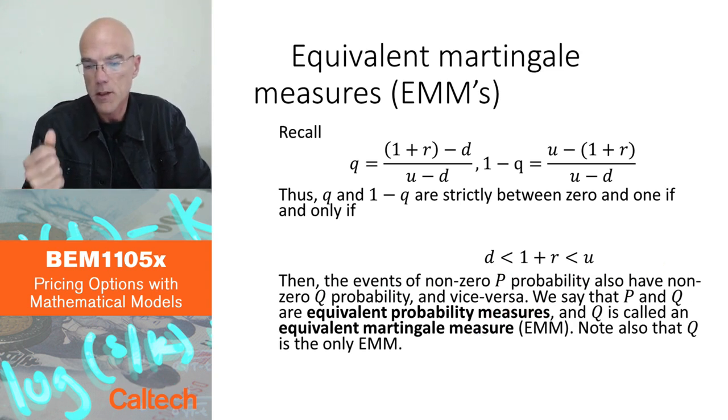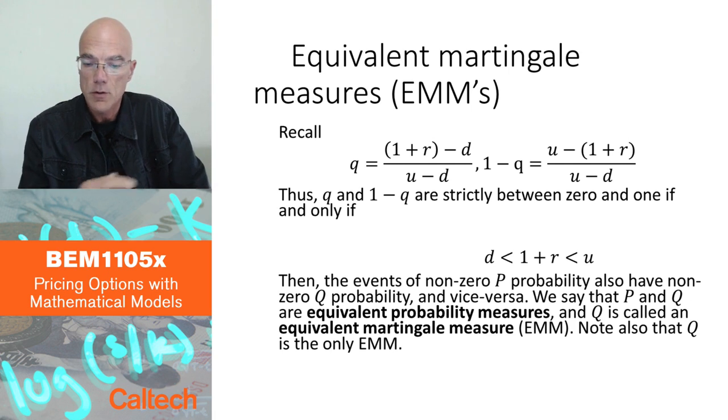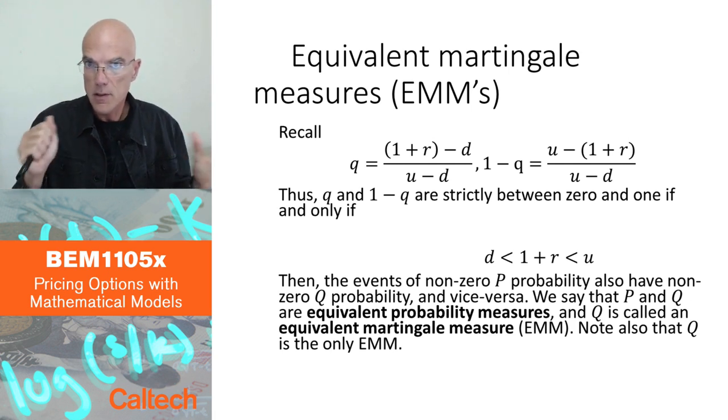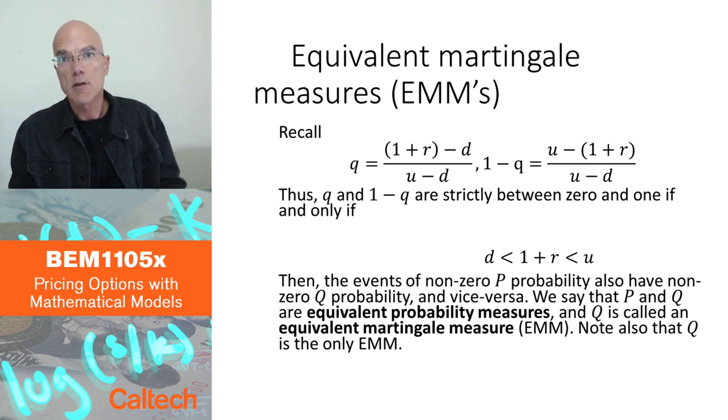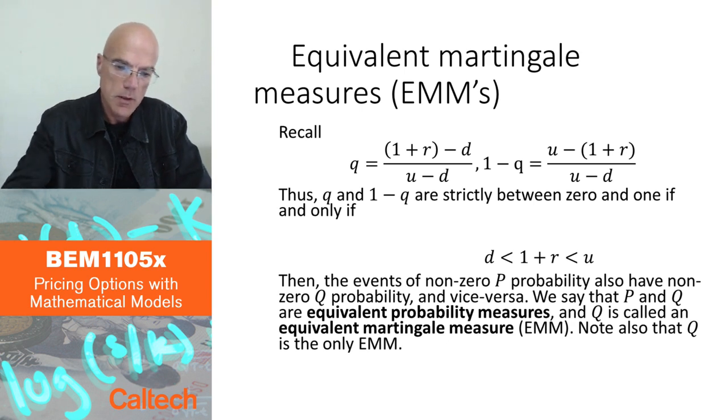Or, if you want, events of zero p probability are also events of zero q probability, and the other way around. So these probabilities give the same zero probability to the same events. So then they are called equivalent. So this one is an equivalent probability measure in the binomial single period model, and it's also equivalent under this condition.